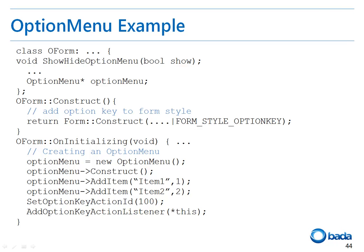I'll explain the procedures to create the option menu. First, I've declared the show-hide option menu function in the form class for convenience. Then, I've declared an option menu pointer as a member variable. In the construct function of the form, I've added a FORM_STYLE_OPTION_KEY flag so that the option key is displayed at the bottom of the form. In the form's onInitializing function, I've created a new option menu and added two items to it. The first parameter is the string that appears in the option menu; the second parameter is the item's action ID. Then, I've assigned an action ID to the option key and allocated a listener for it.